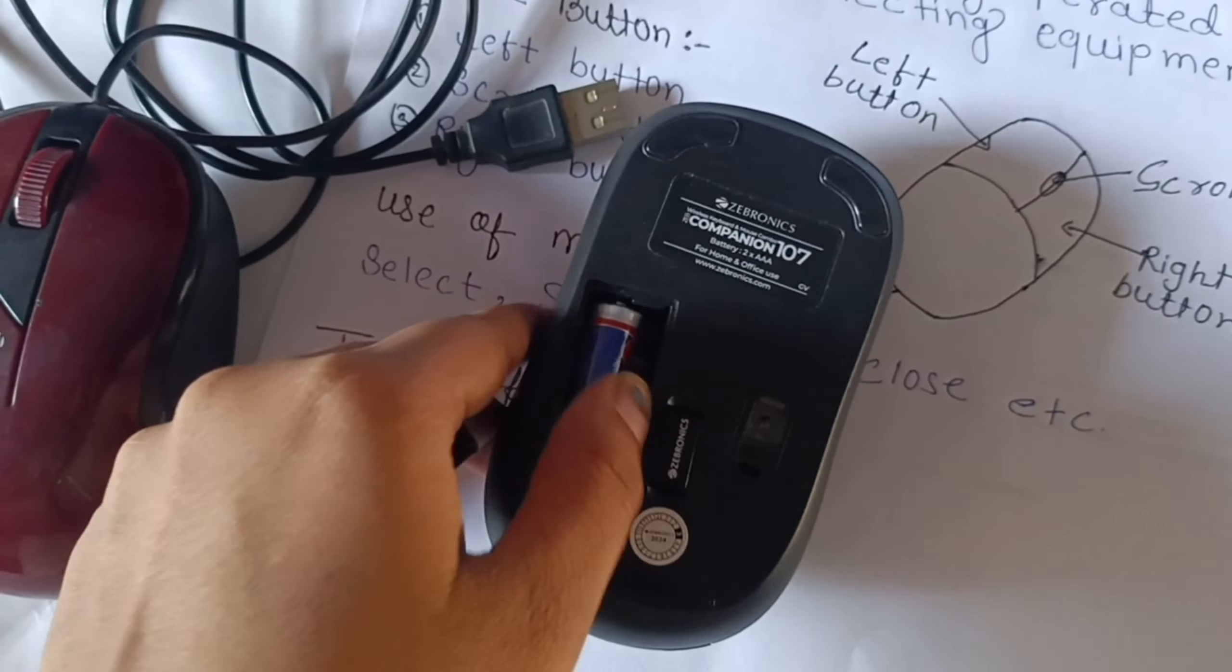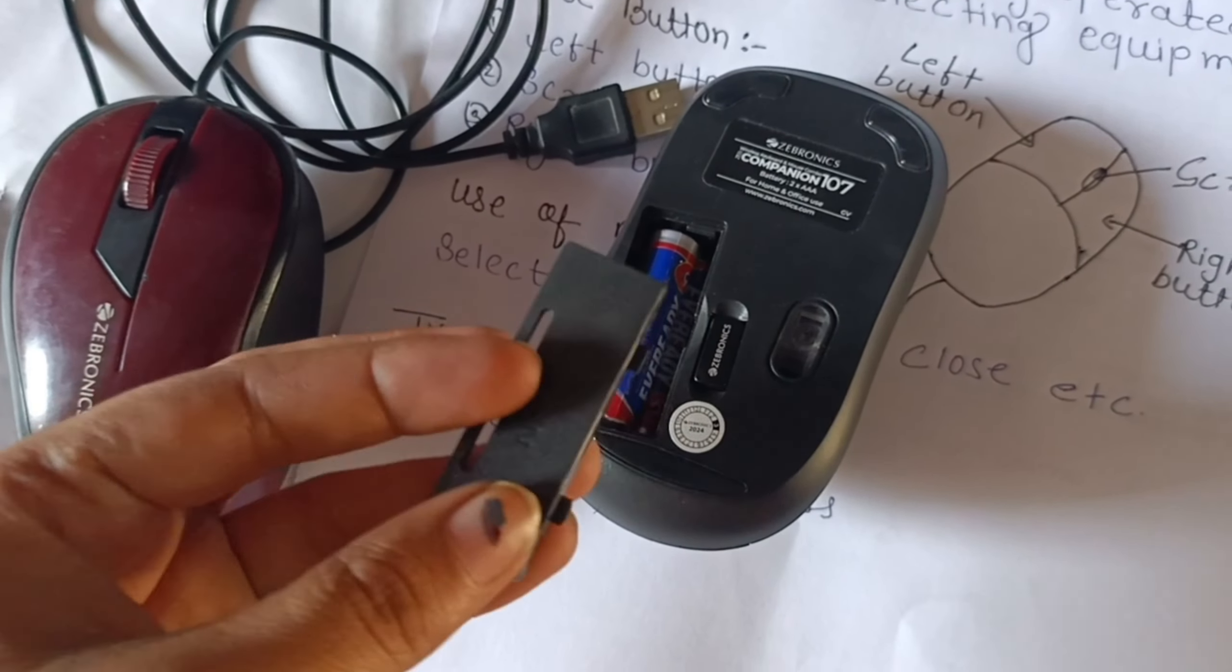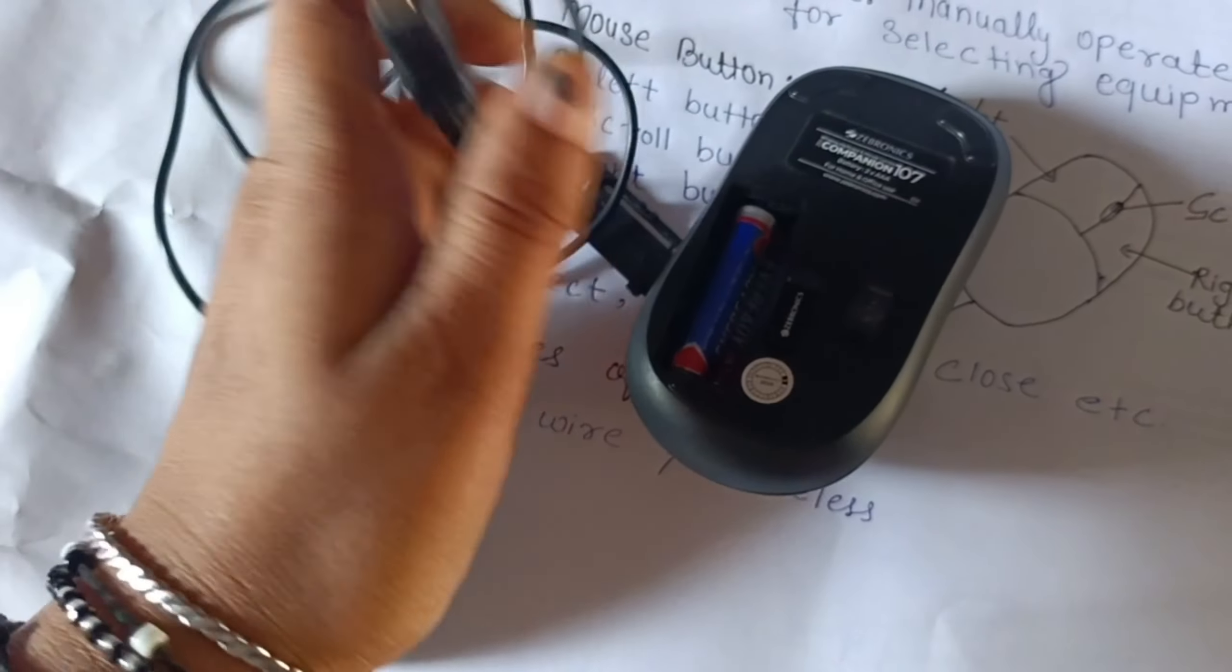With wireless mouse, there will be two batteries inside. This is wireless mouse, and this is the cable for wired mouse.